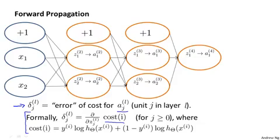So concretely, the cost function is a function of the label y and of the value, this h of x, output by a neural network. And if we could go inside the neural network and just change those zlj values a little bit, then that will affect these values that the neural network is outputting. And so that will end up changing the cost function.